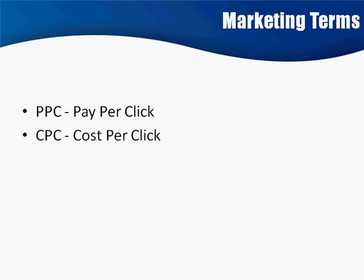Next is CPC — cost per click. That's kind of the same thing as pay-per-click, but it's used in determining factors. Pay-per-click just means you actually pay to get the clicks. Cost per click is how much you're paying to get those clicks. So if I say I've got a CPC of $0.25, that means every time somebody clicks on my ad, I pay $0.25.